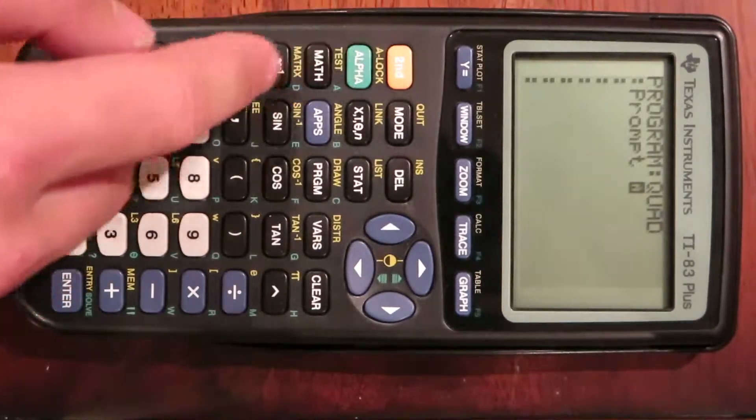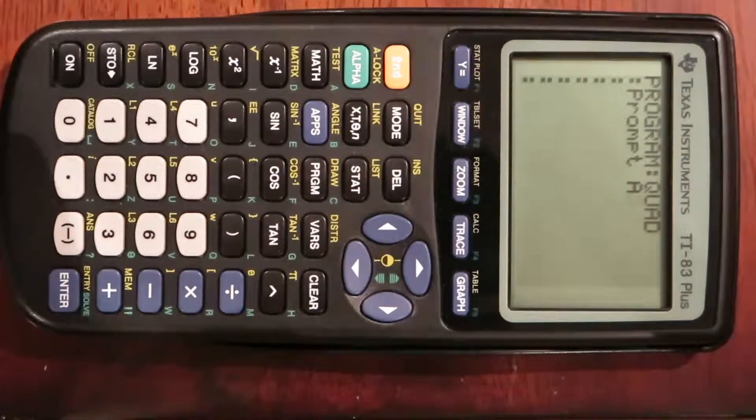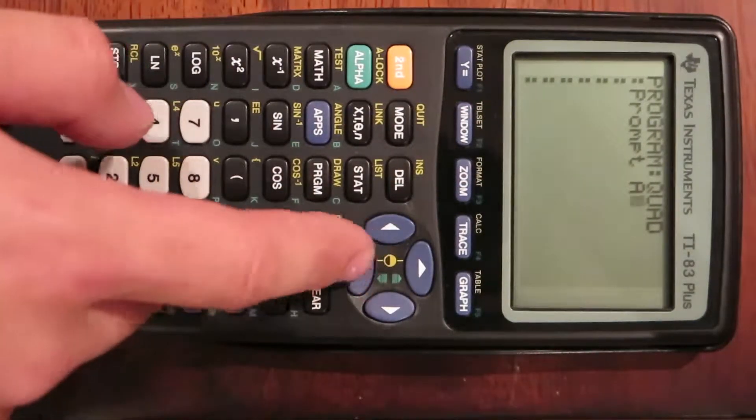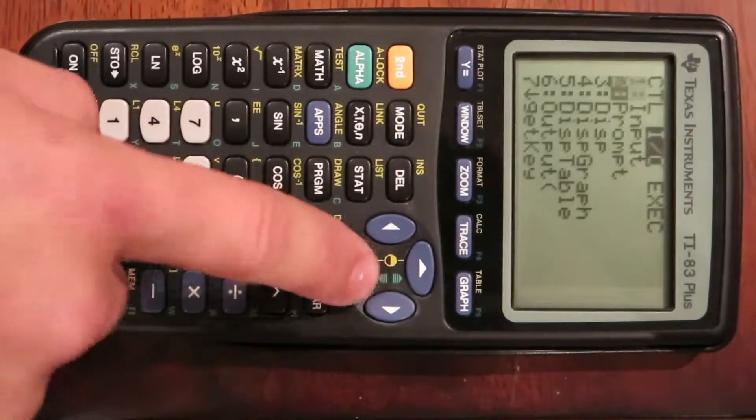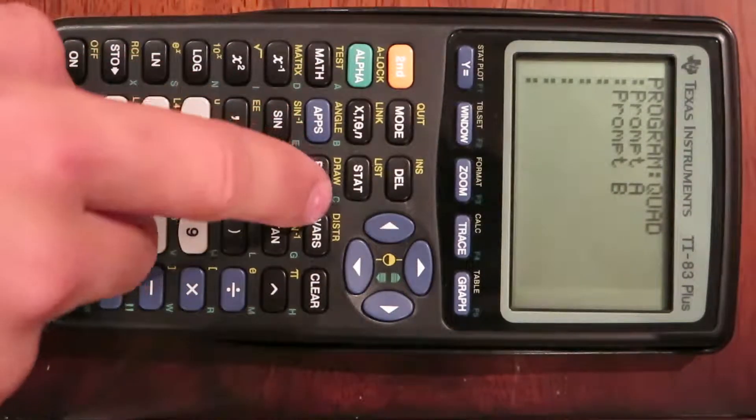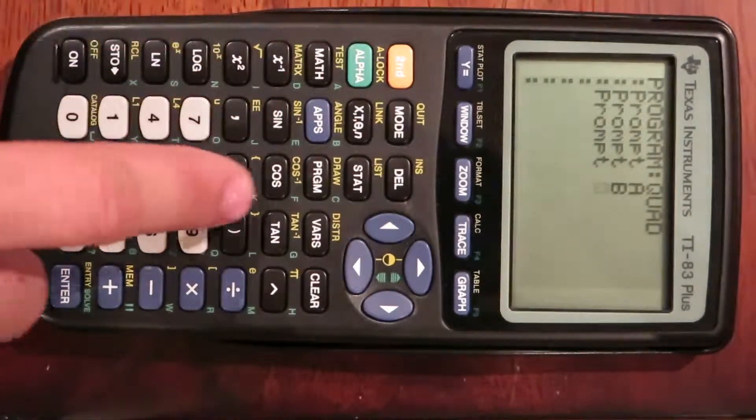Go to prompt, then alpha A for your A variable, enter. Then program, input output, prompt, alpha B, enter. Then program, input output, prompt, alpha C.